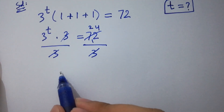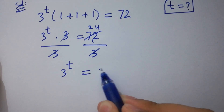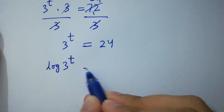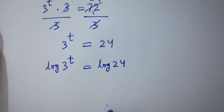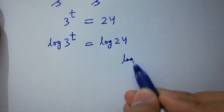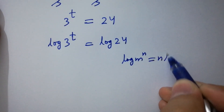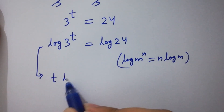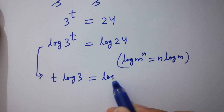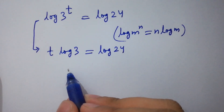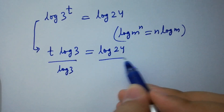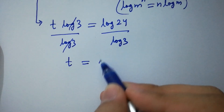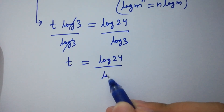Then we have 3 to the power t equal to 24. Take log on both sides: log 3 to the power t equals log 24. As we know, log m to the power n equals n log m. Then it will be t log 3 equals log 24. So dividing both sides by log 3, we have t equal to log 24 over log 3.